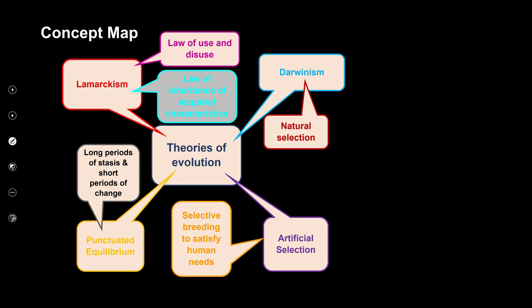Let's have a look at the concepts or the aspects that we're going to cover in this topic. In the theories of evolution, we're going to have a look at Lamarckism, Darwinism, punctuated equilibrium, and then artificial selection.